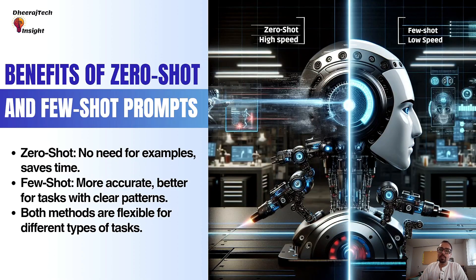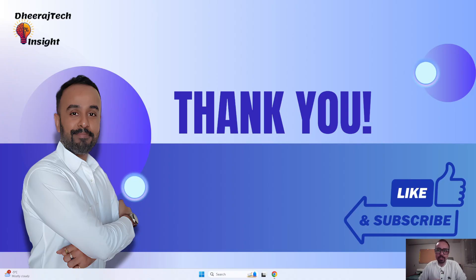To summarize: zero-shot is great when you need the AI to quickly perform tasks with no setup, since it doesn't require any training examples. Few-shot is more accurate because the AI can learn from the examples you give; it's a bit slower compared to zero-shot, but it gets the job done accurately. Both are flexible for different types of tasks — you just need to understand when to use each one. Thank you for watching, and I hope this tutorial helped you get started with prompt engineering. Don't forget to like, comment with any questions, and subscribe for more tips and tricks. Happy prompting, and I'll see you in the next video!